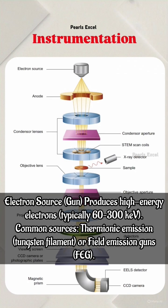Instrumentation. Electron source: the gun produces high-energy electrons, typically 60 to 300 keV. Common sources include thermionic emission with a tungsten filament, or field emission guns (FEG).